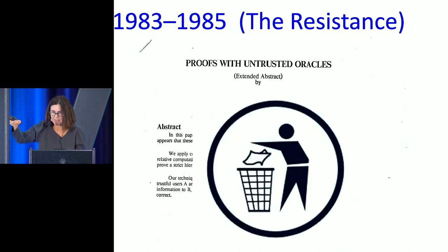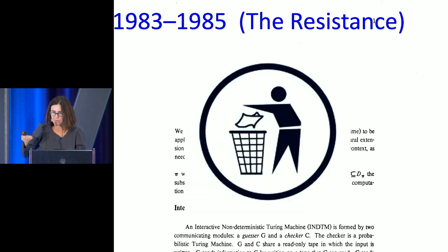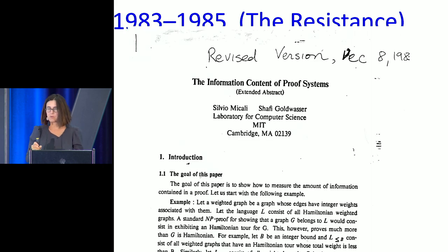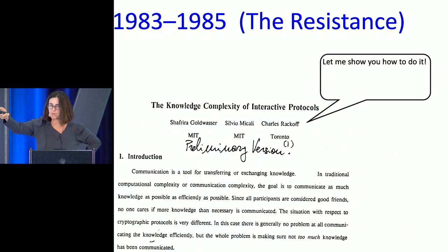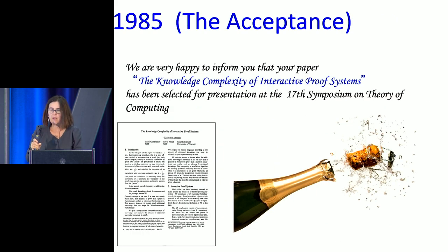Before the big milestones — this is to encourage students about getting published. This paper did not make it through easily. First we had 'Proofs with Untrusted Oracle' — rejected. Then 'Interactive and Minimal Computations' — rejected. Then something like 'Participatory Proofs' or 'Information Content of Proof Systems' — rejected. Then Rakov said 'the knowledge complexity of interactive proofs' — rejected. And then finally it got in. It's called 'The Knowledge Complexity of Interactive Proofs,' 1985.